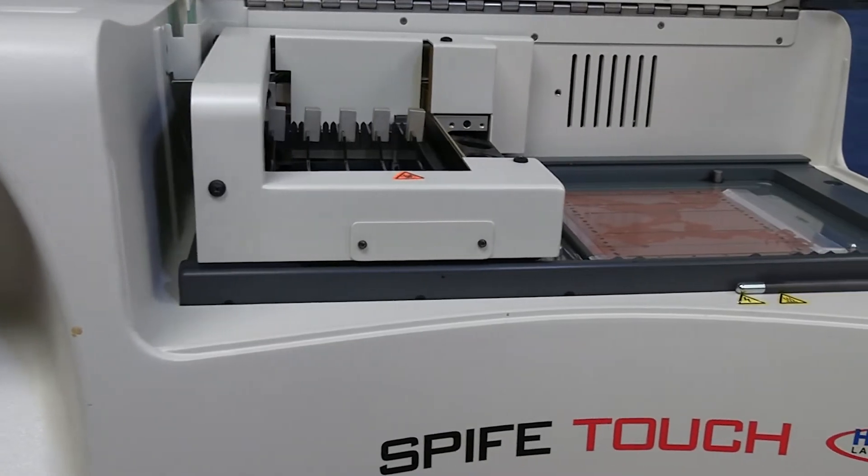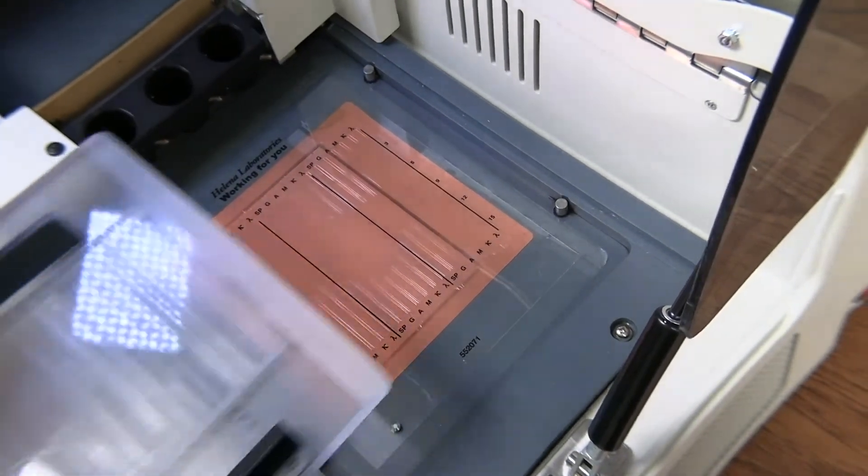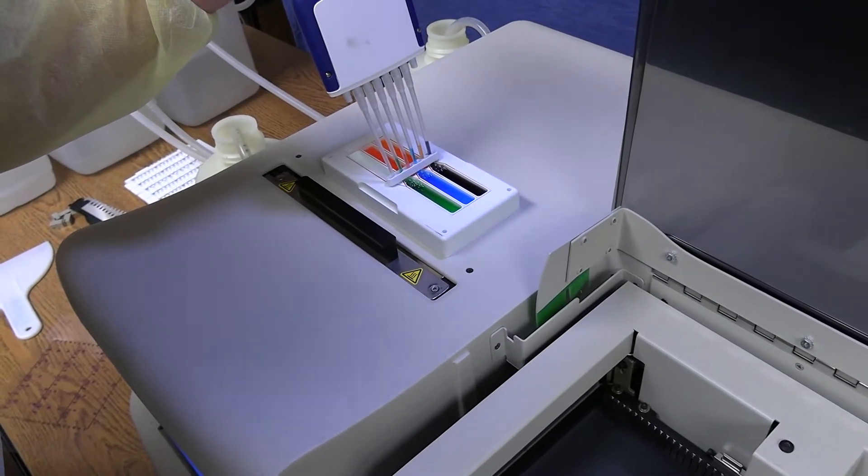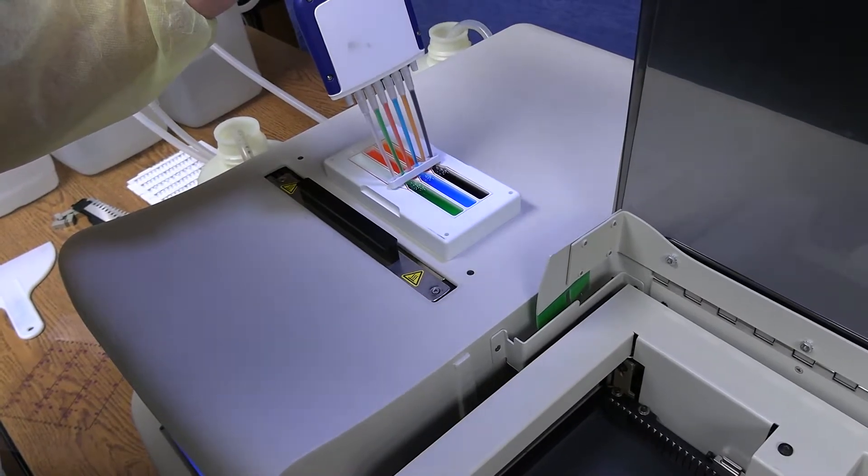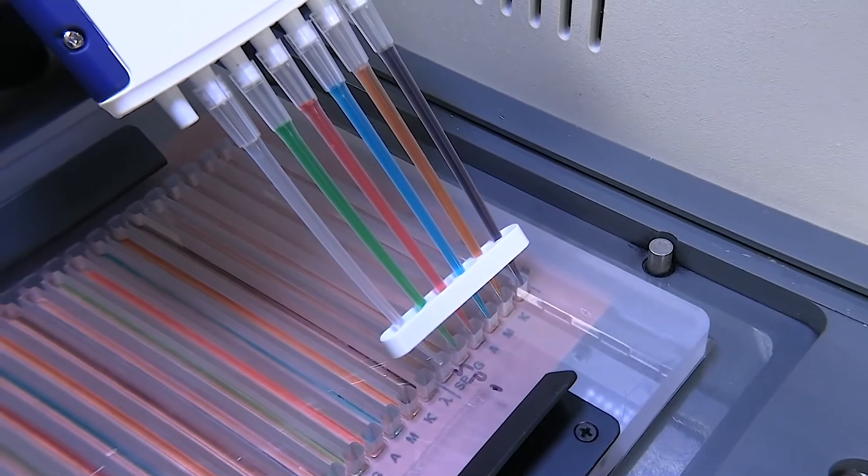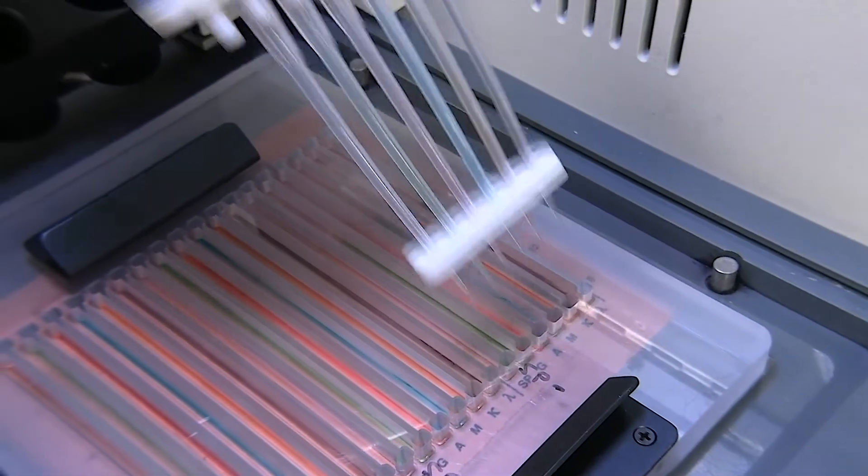IFE testing is simplified by the use of the anti-SERA template placed over the gel to allow swift anti-SERA application with multi-channel pipetter. This pipetter dramatically reduces the number of pipetting strokes needed. To apply anti-SERA for an IFE 15 patient gel requires only three pipetting strokes.